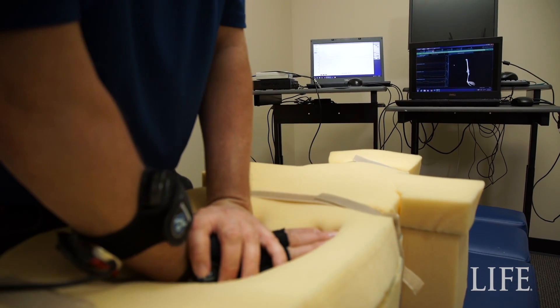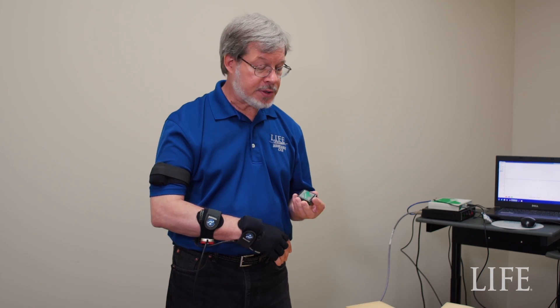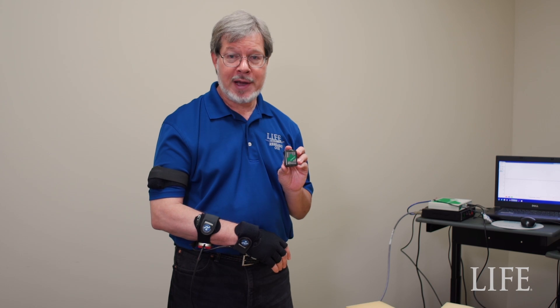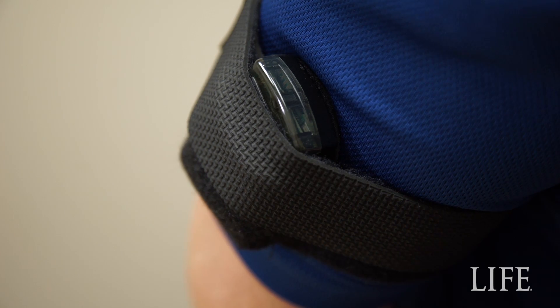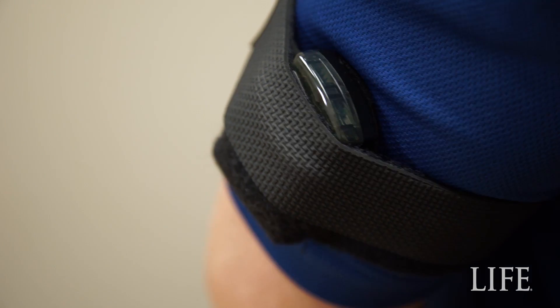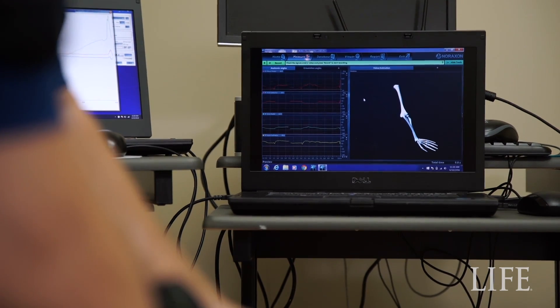To track the motions of performing adjustments, we use these inertial measurement unit sensors, and they track motion basically the same way that your cell phone tracks motion.